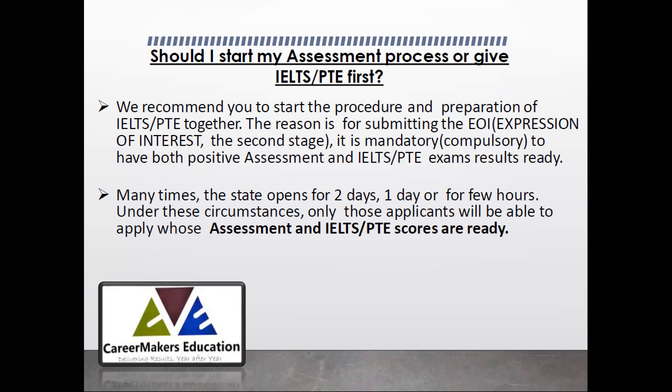Many people ask whether they should first complete the assessment process or start IELTS/PTE. I recommend doing both simultaneously. You need at least 2 to 3 months to get a great score in IELTS or PTE — aim for 7 or 8 bands. Meanwhile, you can also start preparing for your immigration procedure. If you only prepare for the English test first and then start the immigration process after 3 months, you are wasting that very important time.